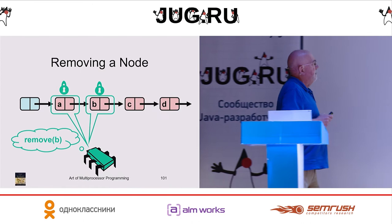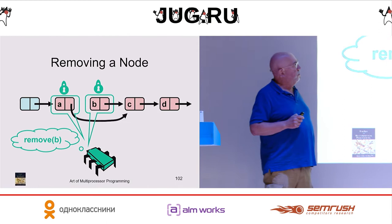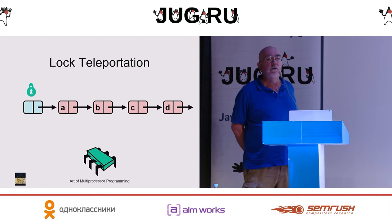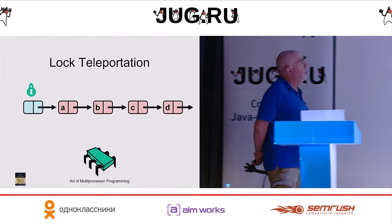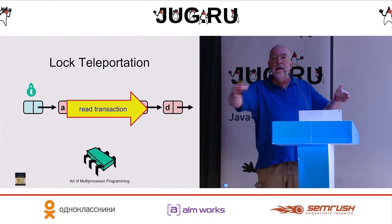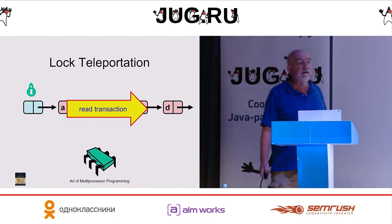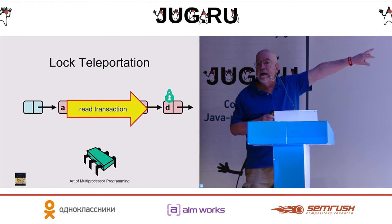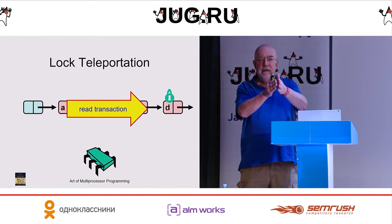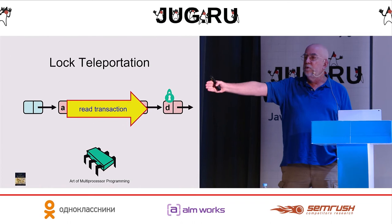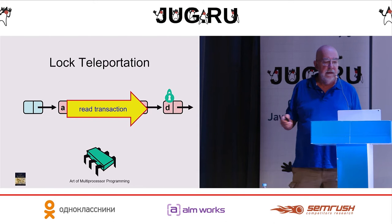For example, if I want to remove a B, then I lock B and B's predecessor, and I swing the pointer. With lock teleportation, I'm going to use a hardware transaction to skip some intermediate steps. I start in the same situation where I've locked the beginning of the queue. Now I'm going to start a hardware transaction, and under that transaction, I'm going to just read through the list without acquiring any locks. At some point I've gone far enough, and I'm going to clear the lock bit where I started and set the lock bit where I ended, then commit the transaction. From the outside, it looks as if the lock vanished from one place and appeared in the next place without going through any intermediate places.